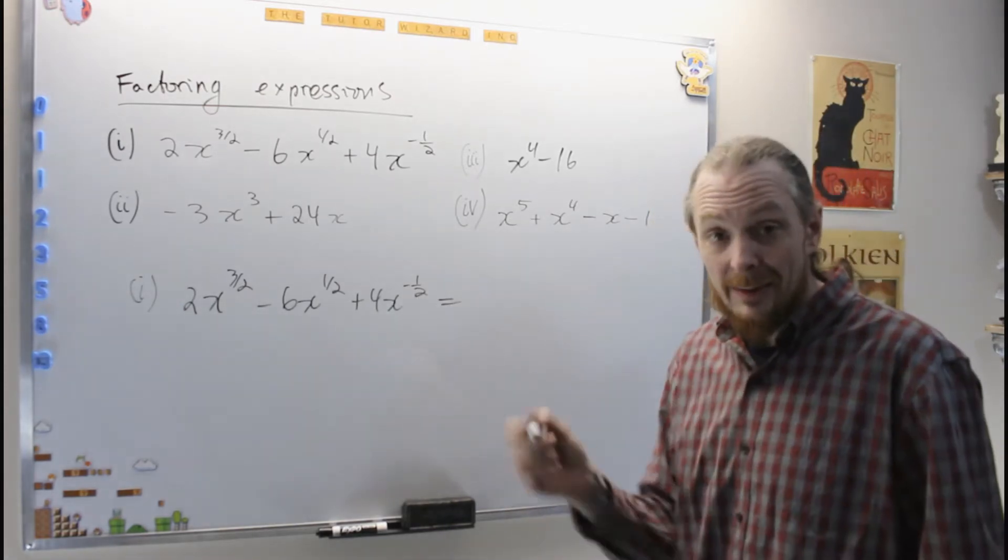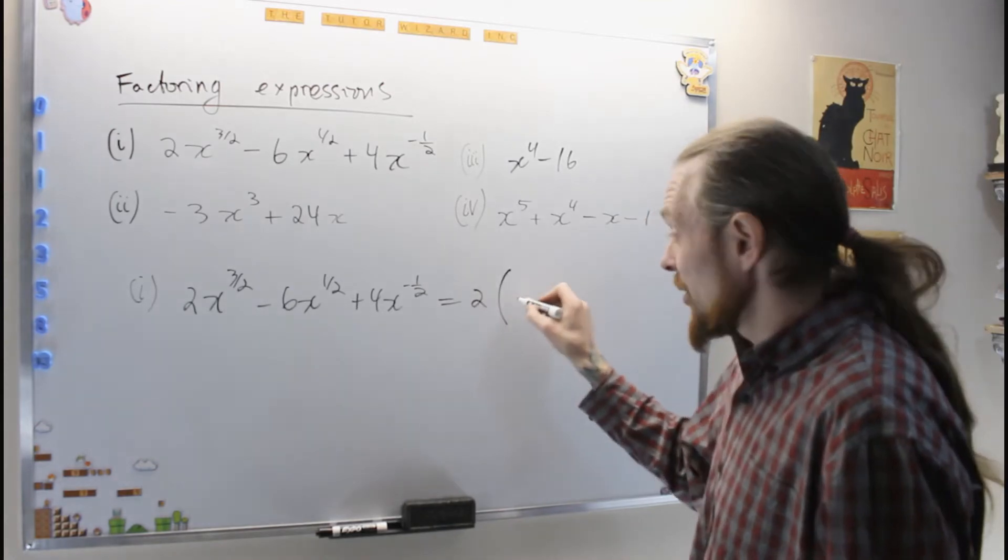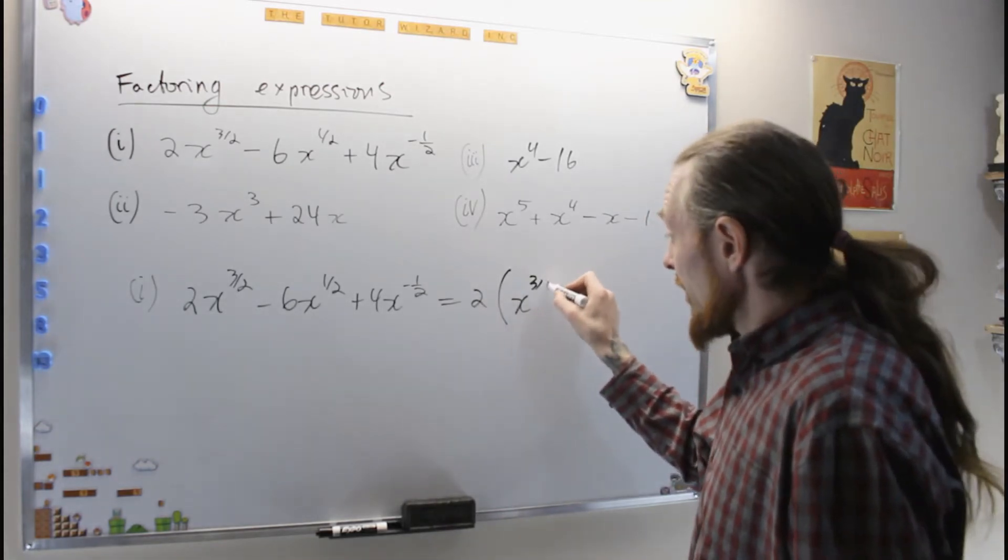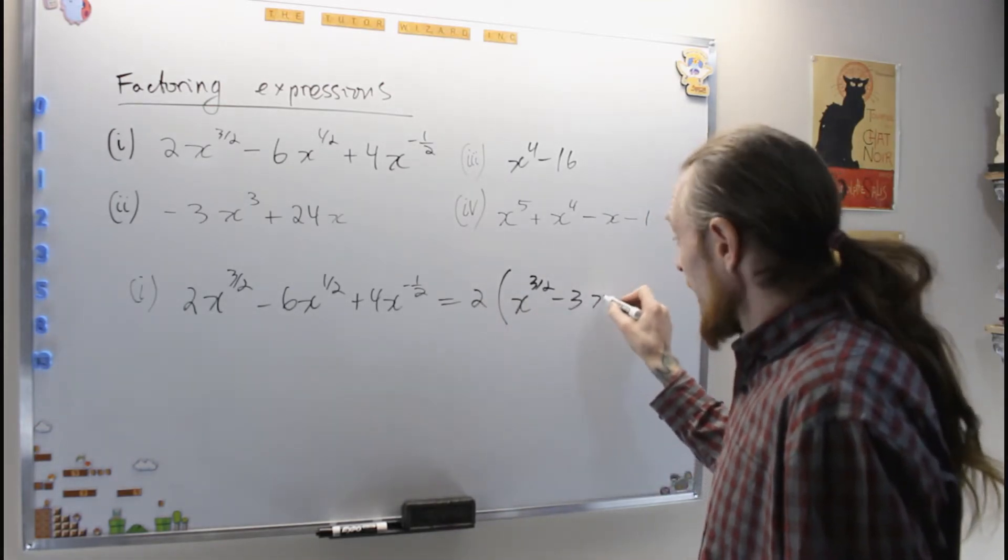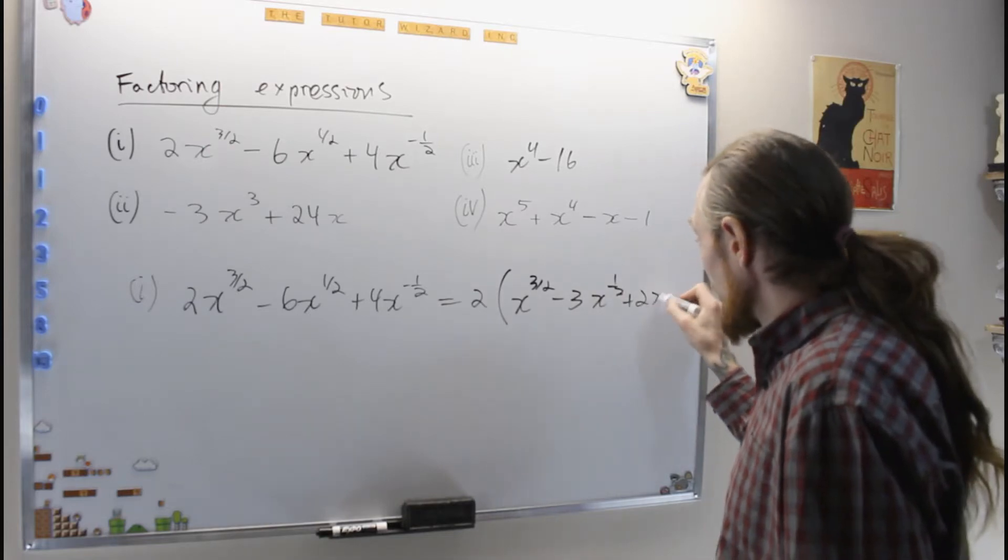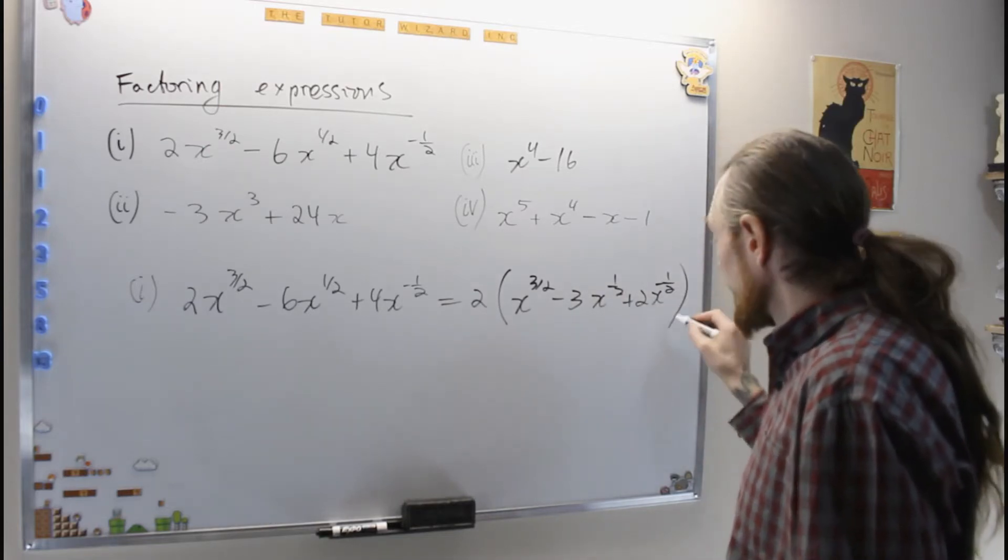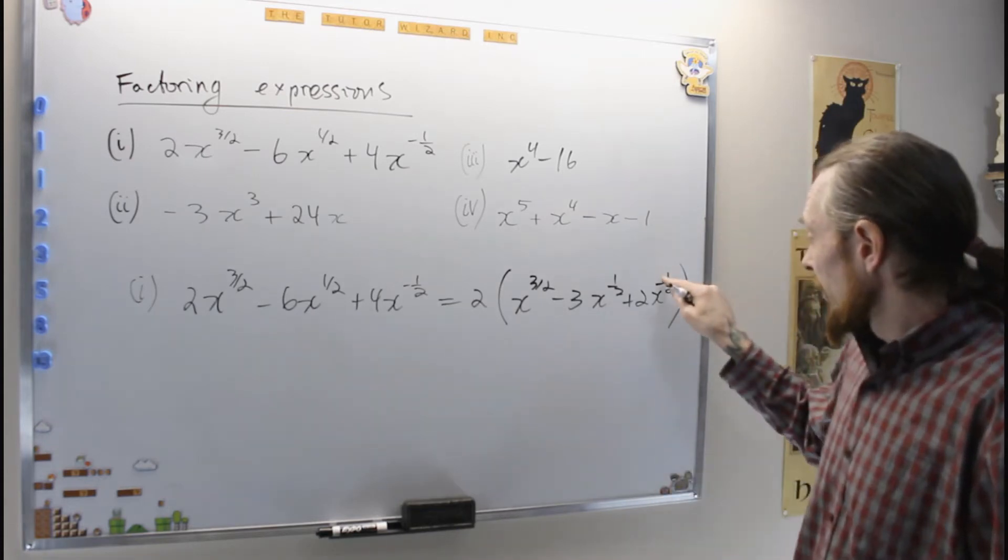So I'm going to do that. If you have to do it one at a time so you can see it, that's what I'm going to do. So first, I'm just going to take the 2 out of each term. x to the 3 over 2 minus 3x to the 1 half plus 2x to the minus 1 half.